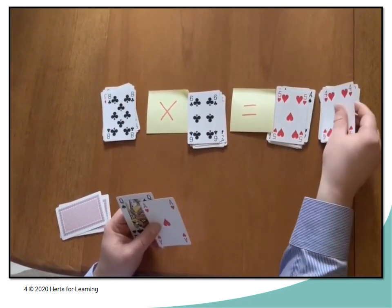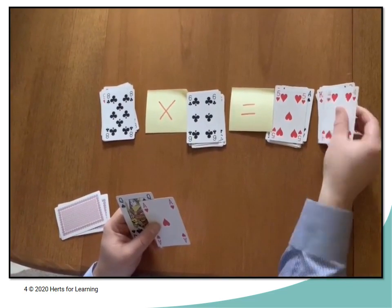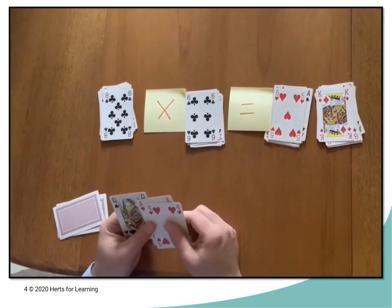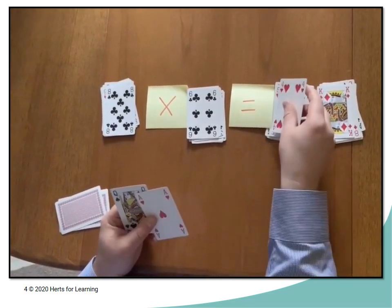They're going for 8 multiplied by 6 is equal to 42. 48 sorry.